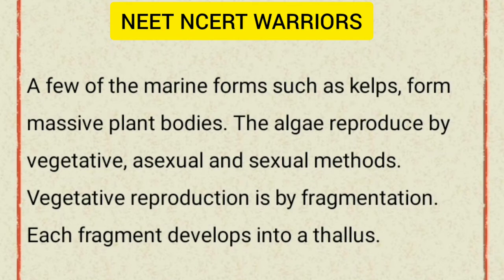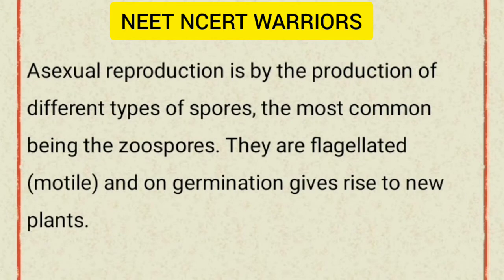The algae reproduce by vegetative, asexual and sexual methods. Vegetative reproduction is by fragmentation — each fragment develops into a thallus. Asexual reproduction is by the production of different types of spores, the most common being the zoospores, which are flagellated and motile, and on germination give rise to new plants.